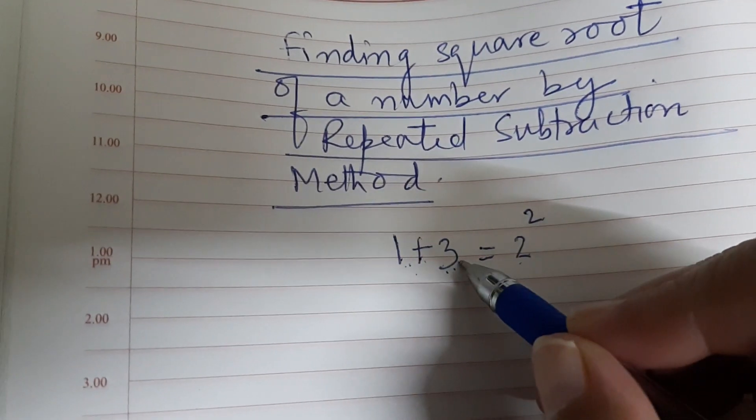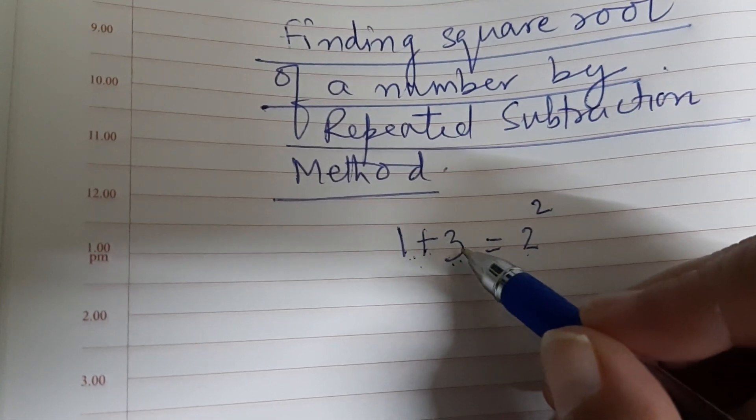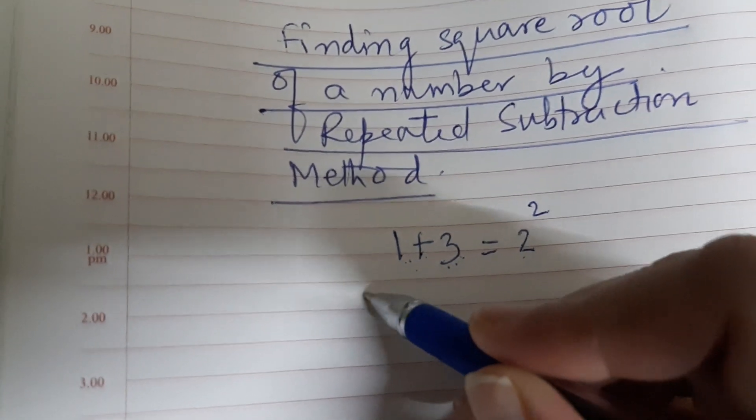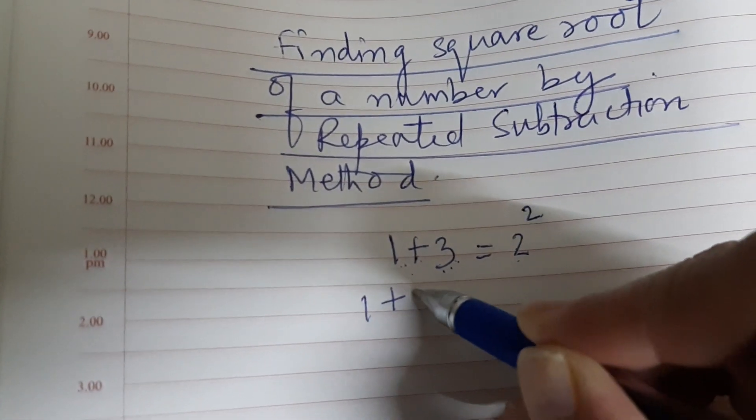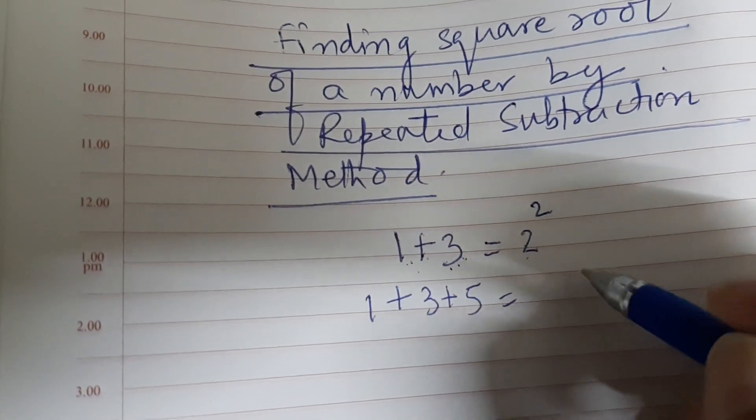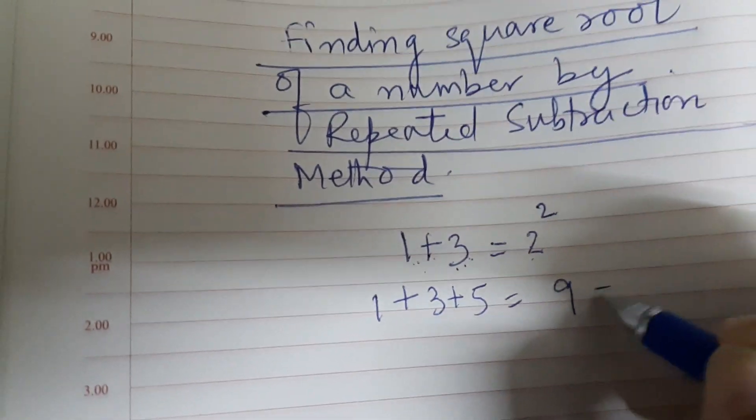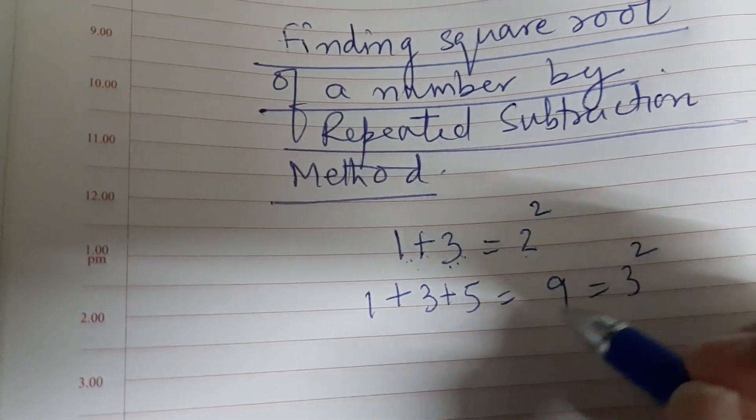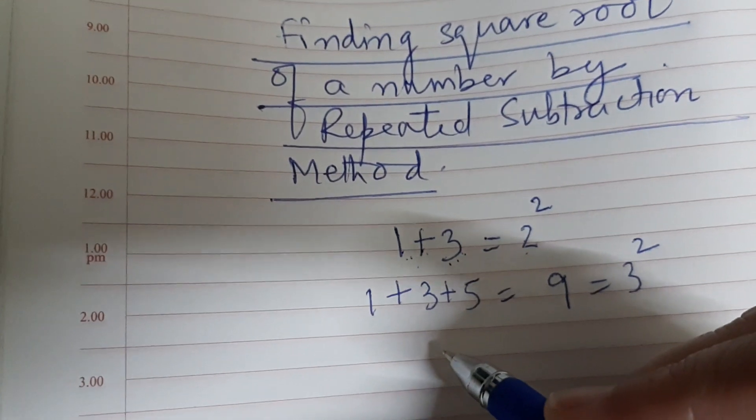Similarly, 1 plus 3 plus 5 equals 9, which can be expressed as 3 squared. So if we have to find out square root of a number by the repeated subtraction method, we would be using this observation. Let us consider an example.